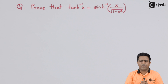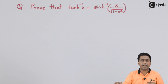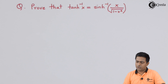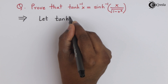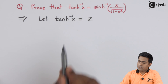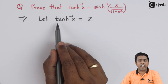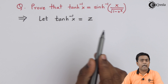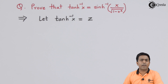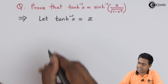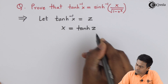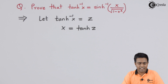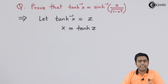The left hand side is tanh⁻¹(x). Initially I will assume it as z, so let tanh⁻¹(x) = z. If I take the hyperbolic tan inverse to the right hand side, we get tanh(z), so we can say x = tanh(z).